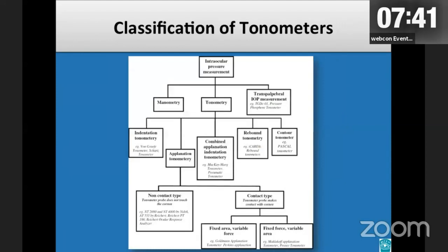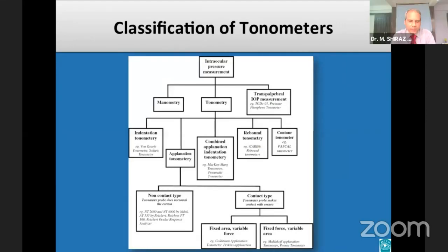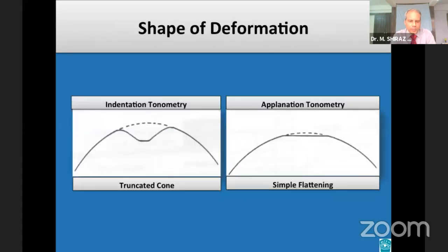This slide depicts the classification of tonometers. In routine clinical practice, we are interested only in the indirect method of tonometry. The two basic types of clinical tonometers differ according to the shape of deformation of the globe produced by the tonometer — a truncated cone with indentation tonometry and a simple flattening with applanation tonometry.